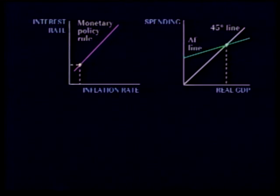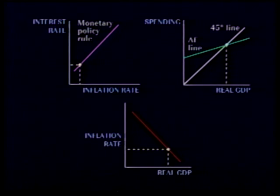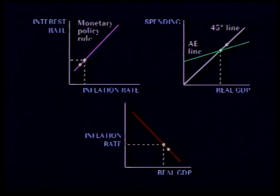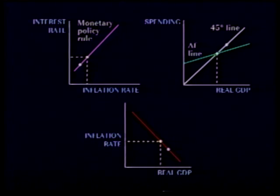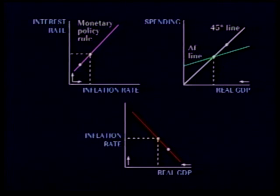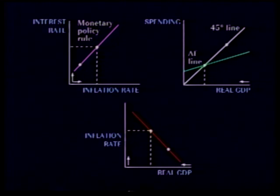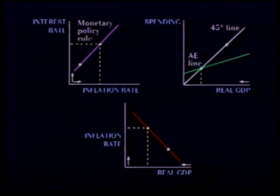Now let's put the pieces of the puzzle together. Imagine that the inflation rate rises by a certain amount. According to the monetary policy rule, also known as Taylor's rule, the Fed would then respond by raising the interest rate. This would cause the aggregate expenditure line to shift downward, resulting in a decline in real GDP.